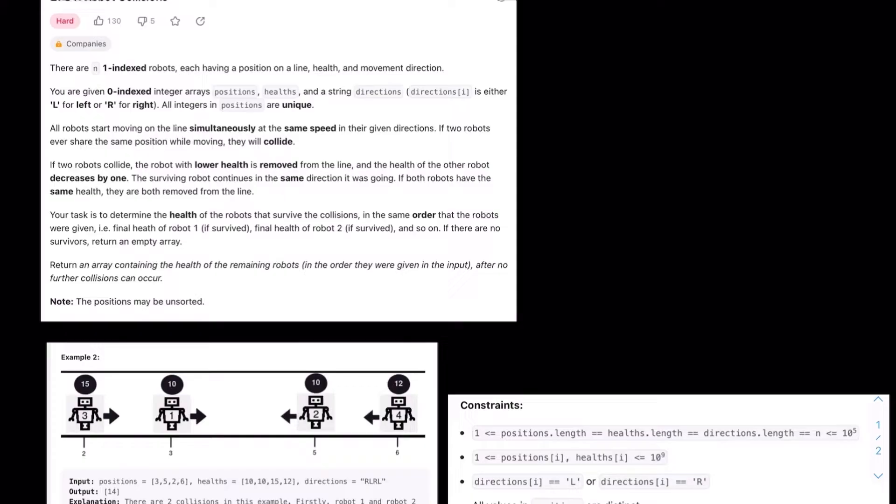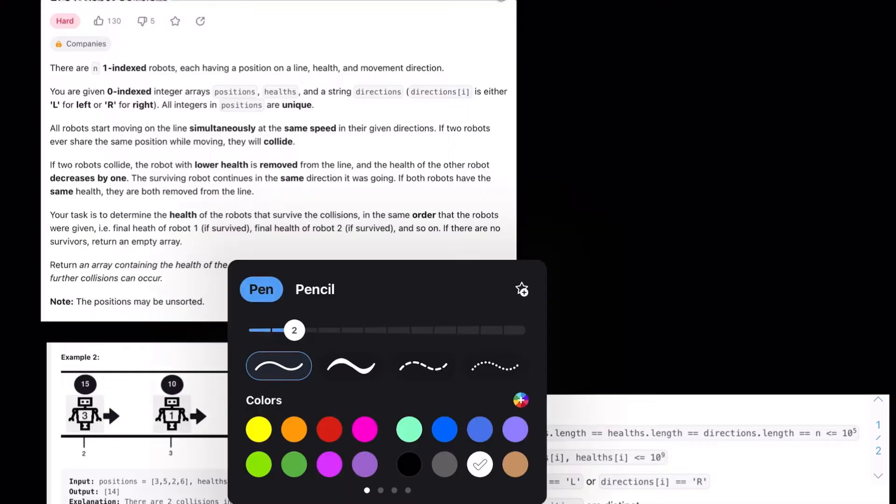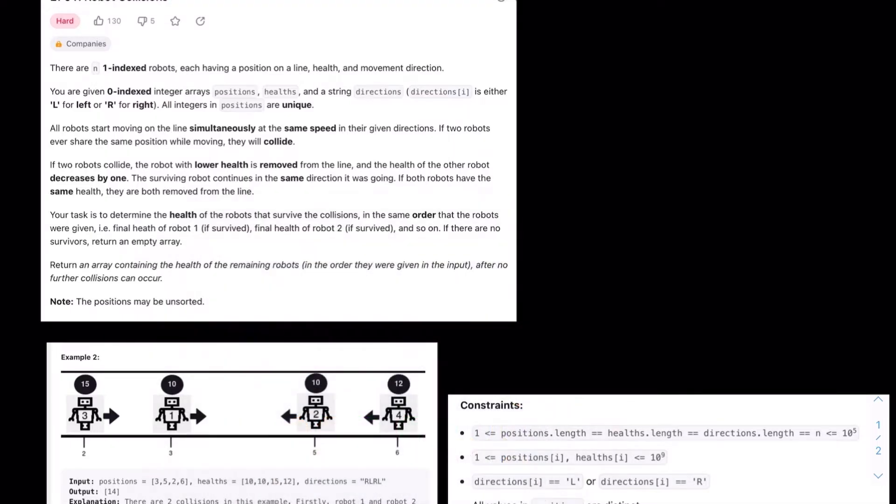All integers in positions are unique, so all starting positions are unique. All robots start moving on the line simultaneously at the same speed in their given direction, so either left or right. If two robots ever share the same position while moving, they collide.